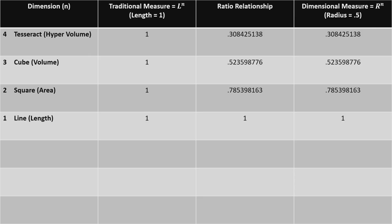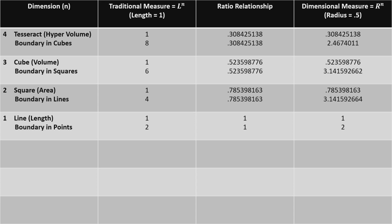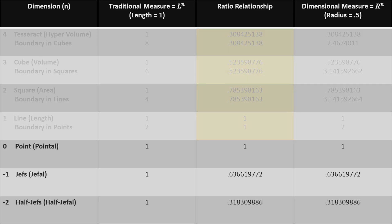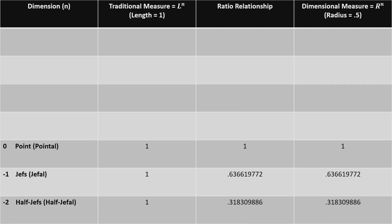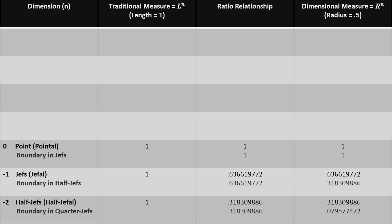Looking at the positive dimensions, we can show a length of 1 modified by an exponent for each traditional measurement, and the corresponding volume of a ball with a radius of 1 half. We can also fill in the boundary values for each object along with the surface values for each sphere to show that the ratio relationships match for each dimension. Switching to the negative dimensions, we can start by filling in all the traditional measurement object values of 1, followed by their corresponding values for dimensional measurement volume, and come up with these ratio relationships in negative dimensions. We can then fill in the values for the known surfaces of each of these spheres, and apply the ratio relationships determined by the object volume calculations to arrive at these values for the boundaries of traditional objects in the negative dimensions.